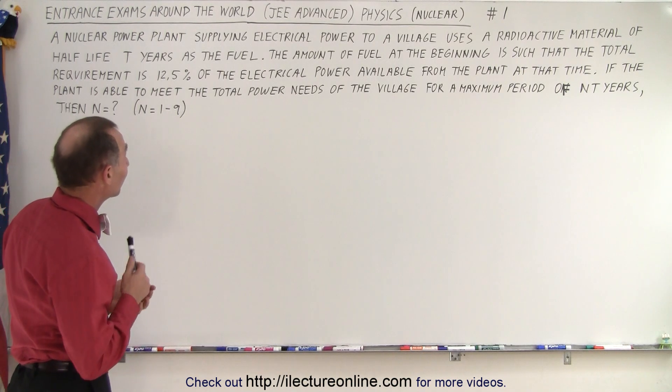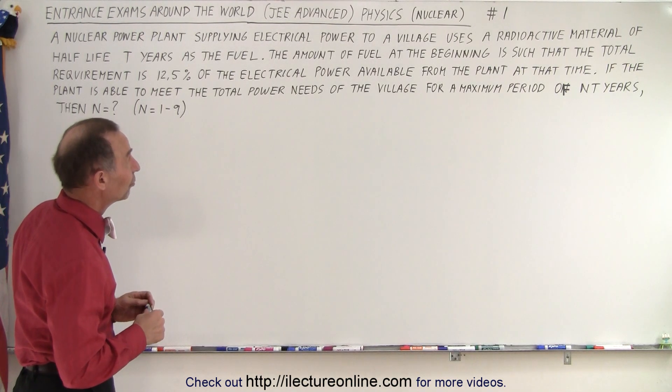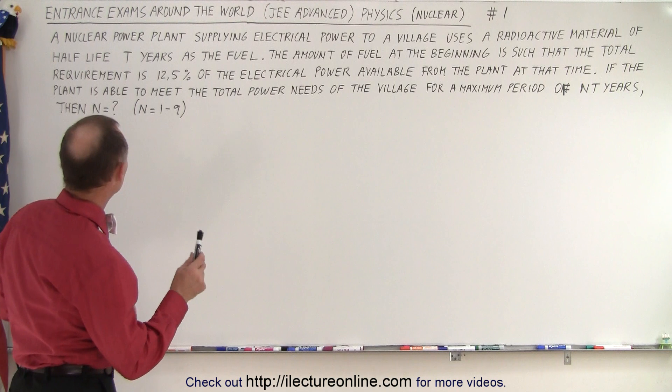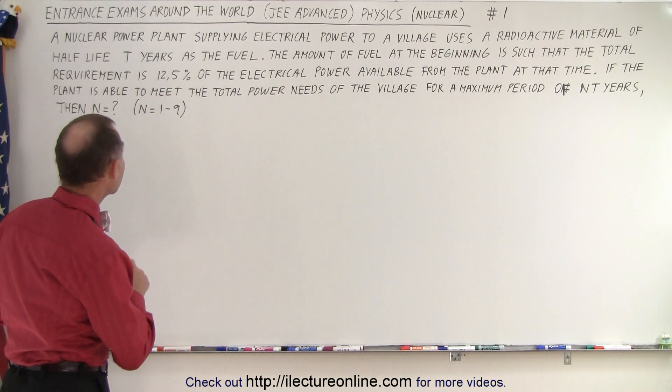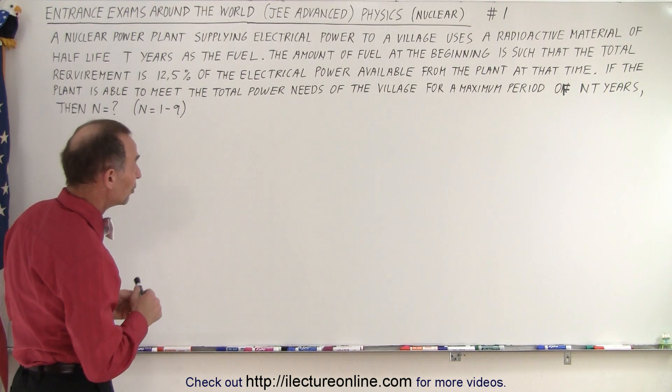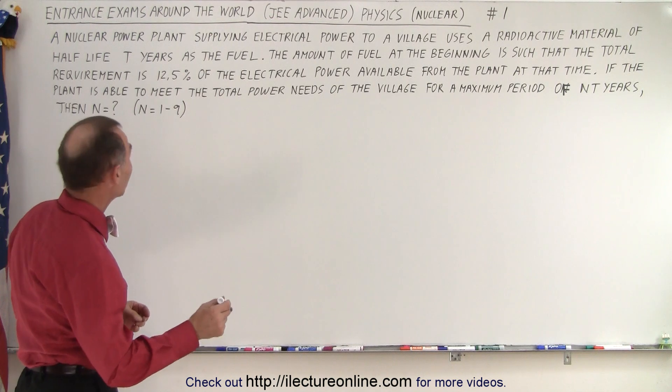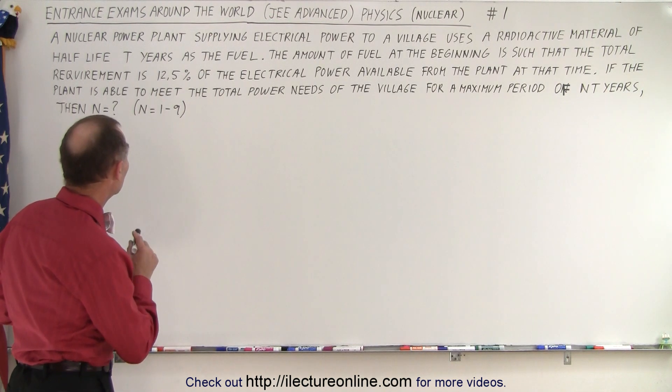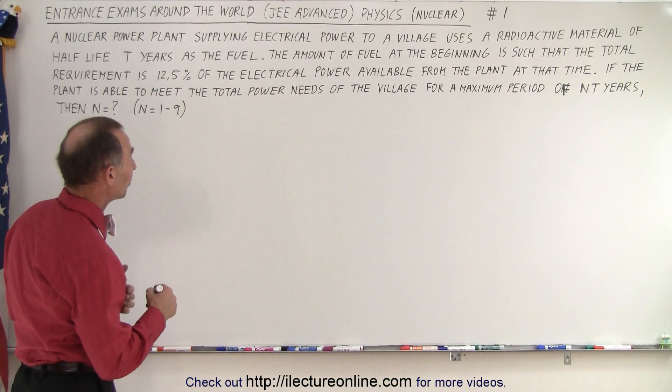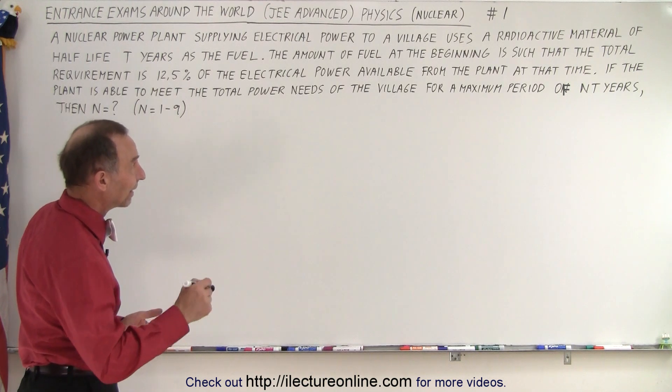We have a nuclear power plant supplying electrical power to a village and it uses a radioactive material of half-life t-years as the fuel. The amount of fuel at the beginning is such that the total requirement is 12.5 percent of the electrical power available from the plant at that time.